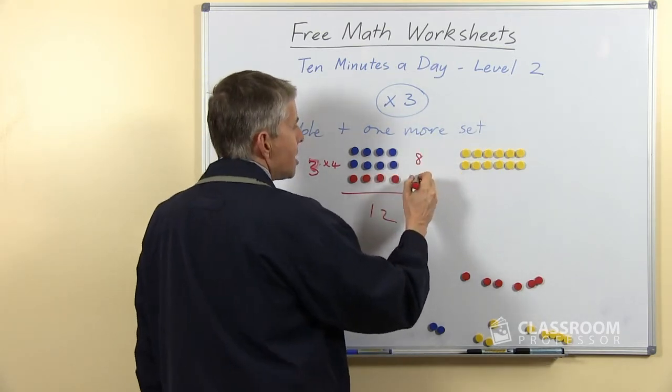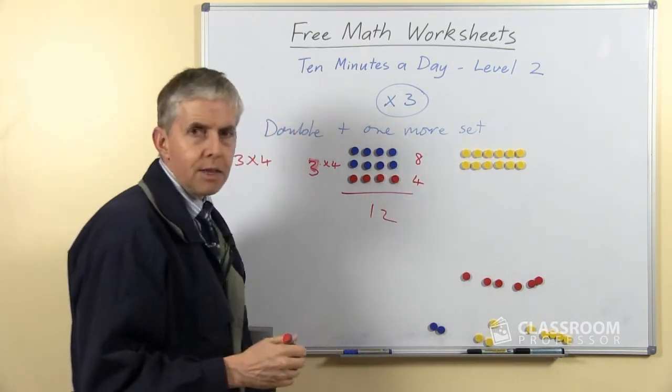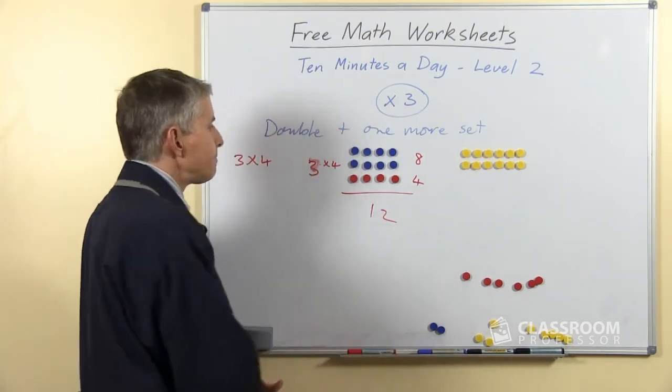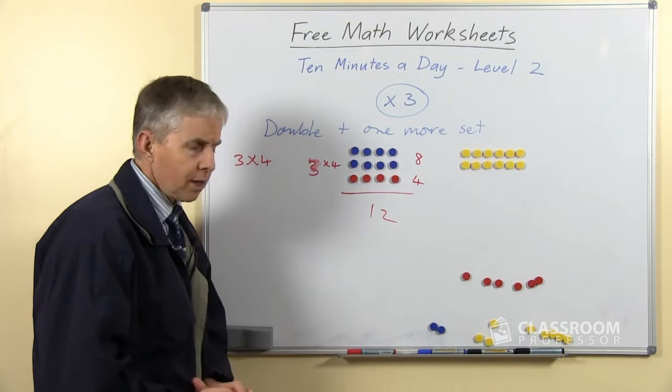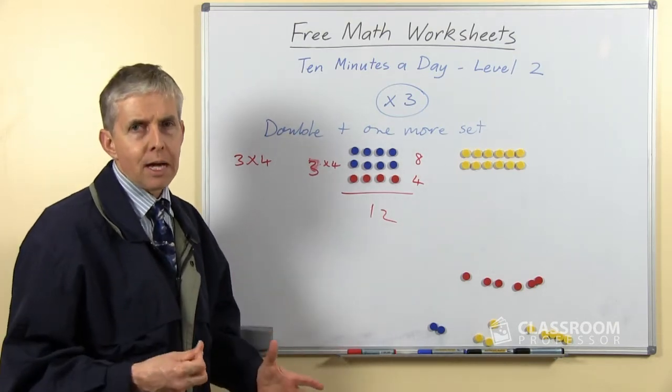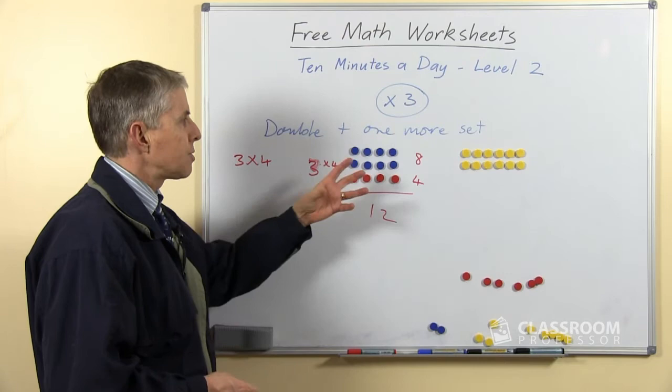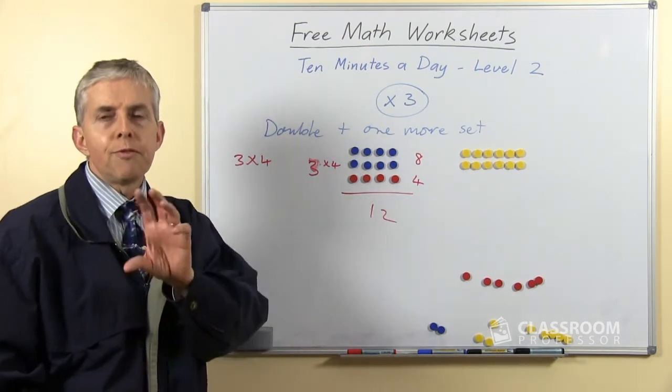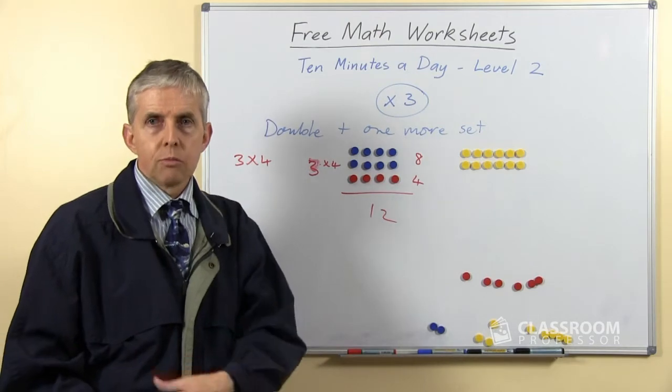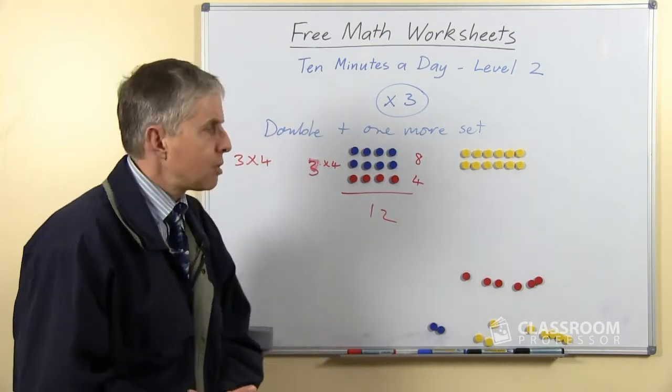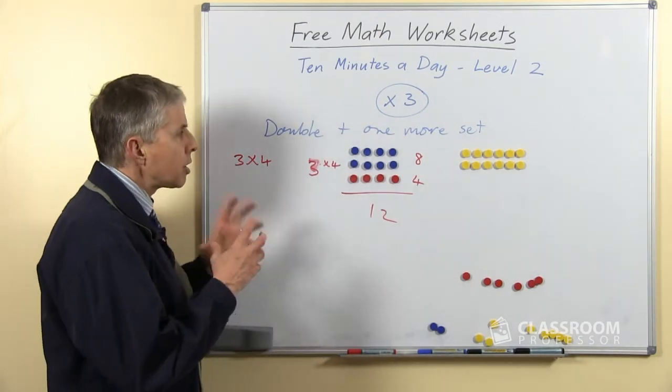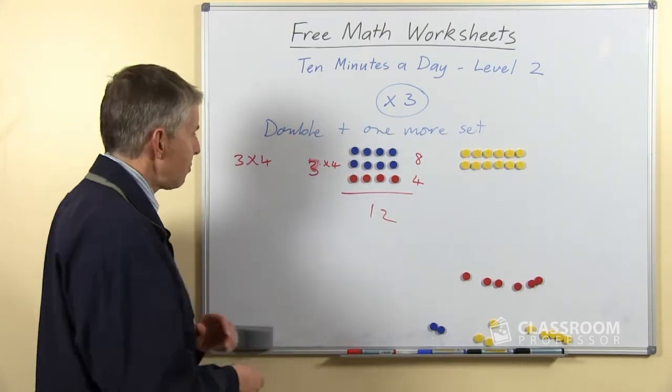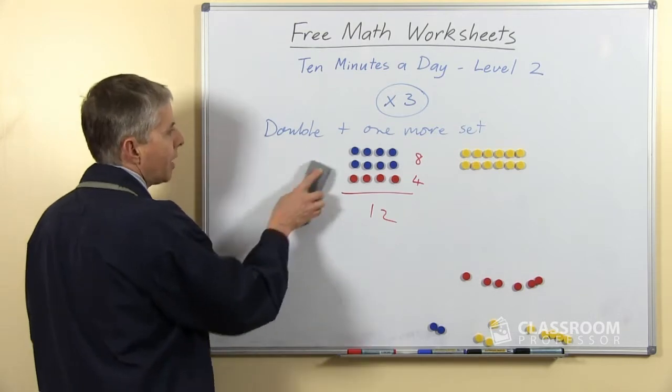So the students need to know their doubles. They need to be able to add the extra one of the multiplier and get the answer right. So it's a little bit trickier than the doubles perhaps. It does involve some tricky additions. If you did 3 times 7, that would be 14 plus 7, which is a bit tricky, but it's quite a good way to get to the 3 times multiplication facts if you don't remember what they are.